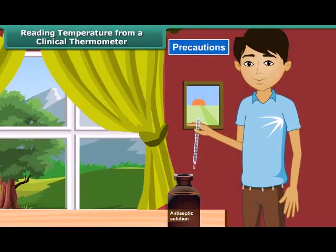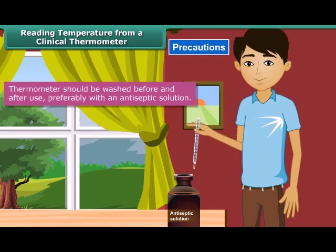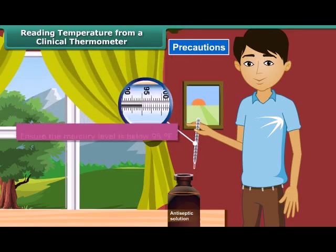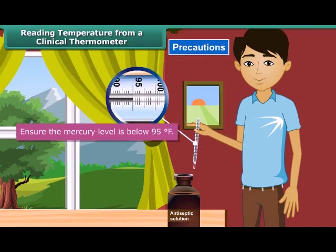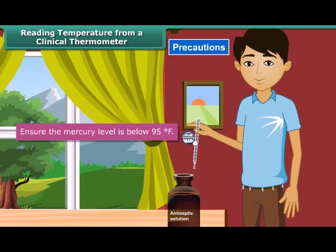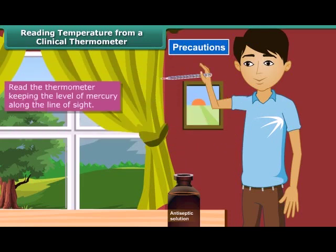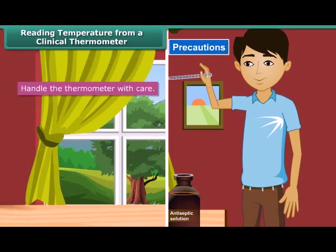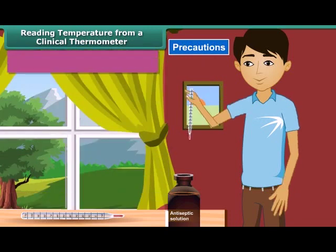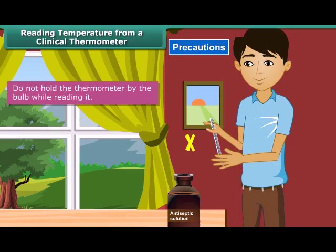Precautions to be observed while reading a clinical thermometer are as follows: Thermometers should be washed before and after use, preferably with an antiseptic solution. Ensure the mercury level is below 95°F. Read the thermometer keeping the level of mercury along the line of sight. Handle the thermometer with care — if it hits against a hard object, it can break. Do not hold the thermometer by the bulb while reading it.